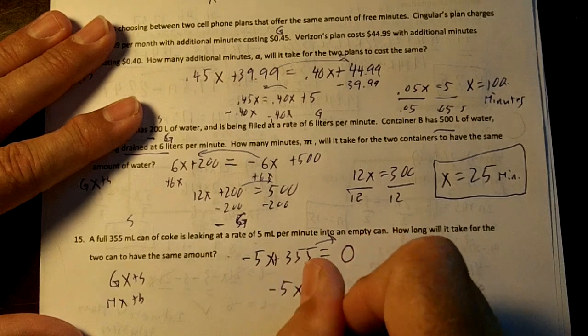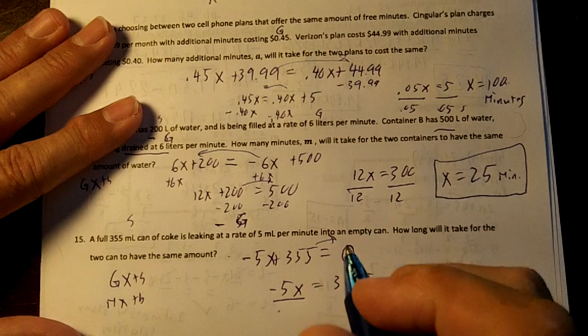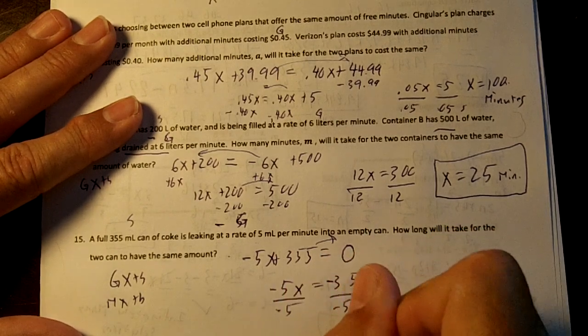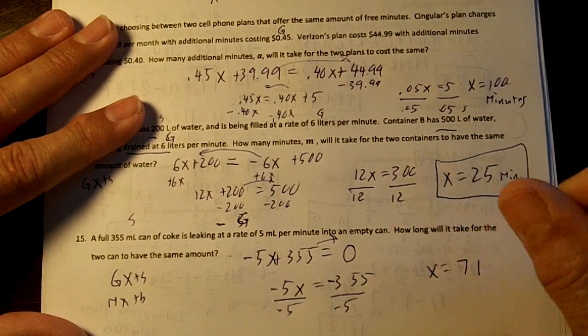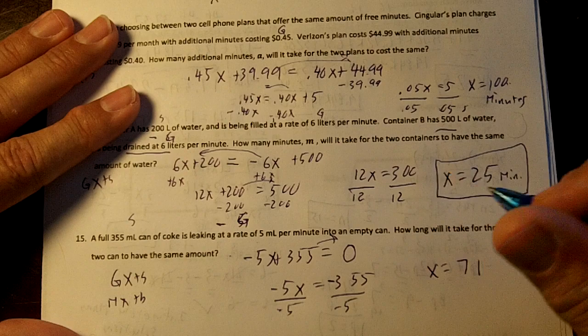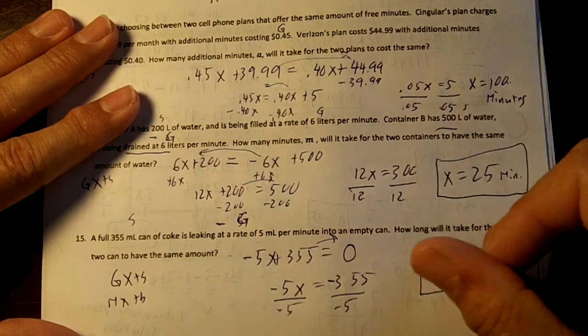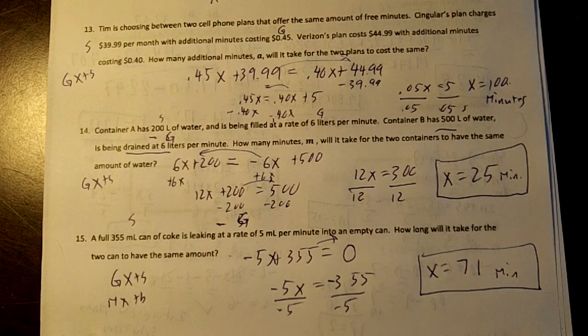So negative 5X equals negative 355. Then divide by negative 5. And we'll get X equals 71. So at 71 minutes, wow, that's a lot of time. At 71 minutes, the two cans will have the same amount of Coke.